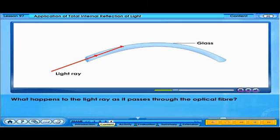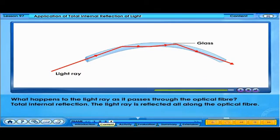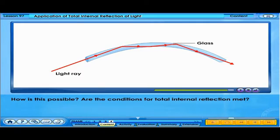What happens to the light ray as it passes through the optical fiber? Total internal reflection. The light ray is reflected all along the optical fiber. How is this possible? Are the conditions for TIR met?